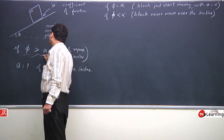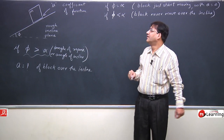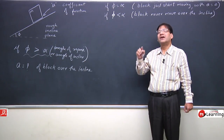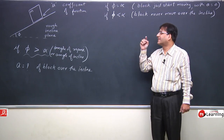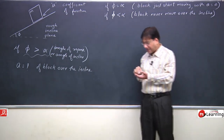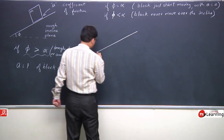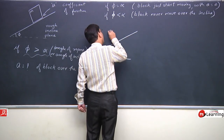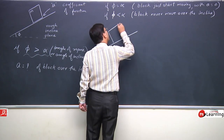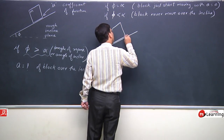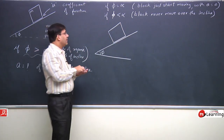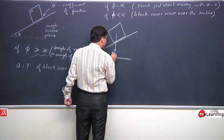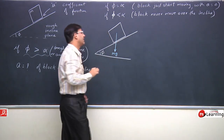If this angle is greater than α — greater than the angle of repose — and the block is on the incline and moves, then what will its acceleration be? Once again, I draw the free body diagram. In order to draw the free body diagram, I will represent all the external forces.